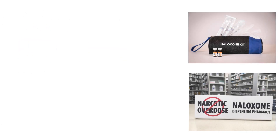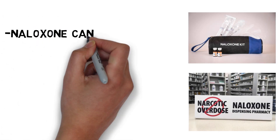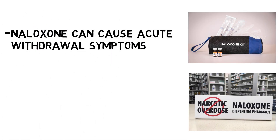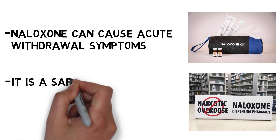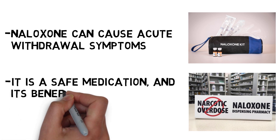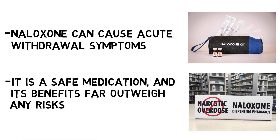When naloxone is administered to someone with opioids in their system, it can cause acute withdrawal symptoms due to the sudden cessation of activity at opioid receptors. While there is some risk associated with complications of acute withdrawal, it is considered low, especially compared to the risk of complications linked to opioid overdose. Naloxone administered to someone who has not used opioids recently typically has little to no effect.